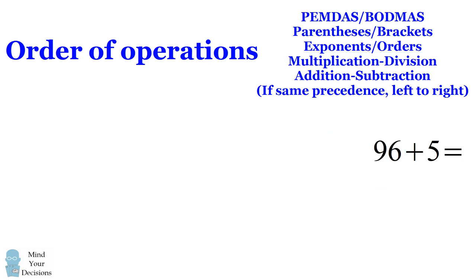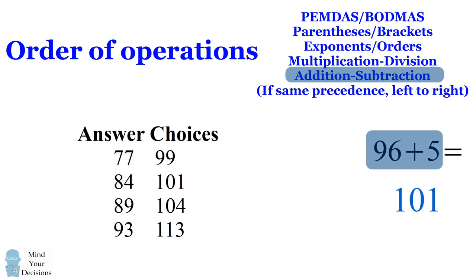And finally, we have the addition, which we can then do. 96 plus 5 is equal to 101. And this is the correct answer choice according to the quiz. However, as I showed you in this video, that's not the correct answer choice of the mathematical expression as it was written.